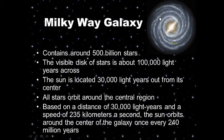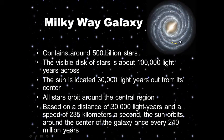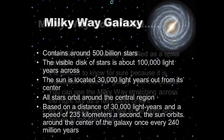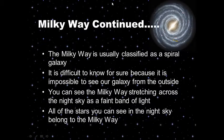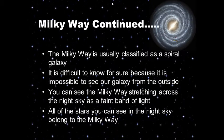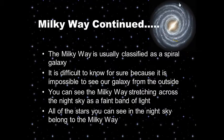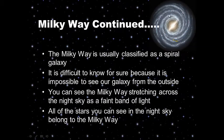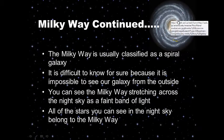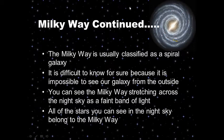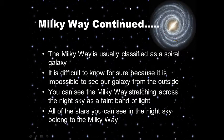We're kind of like a carousel — as we go around, we also go up and down. We orbit the center of our Milky Way galaxy. The Milky Way is usually classified as a spiral galaxy. It is difficult to know for sure because it is impossible to see our galaxy from the outside. This picture is an artist's rendering of what we think our galaxy may look like.